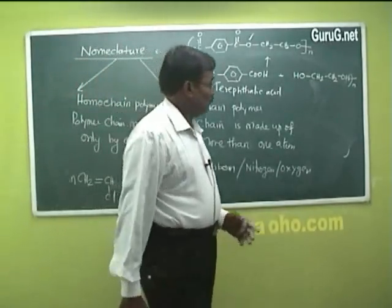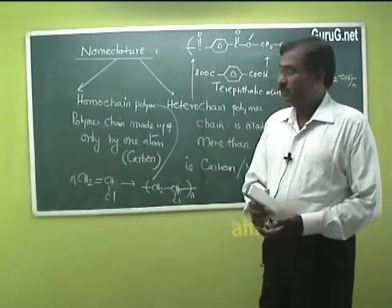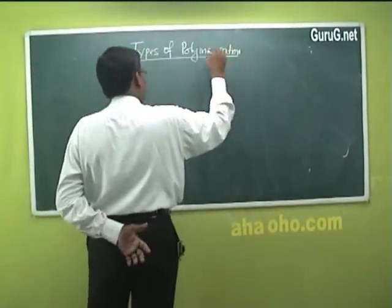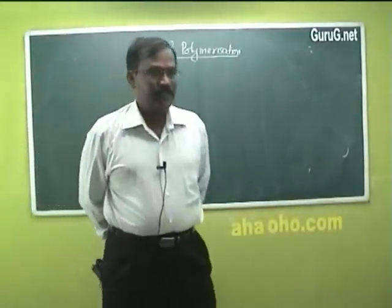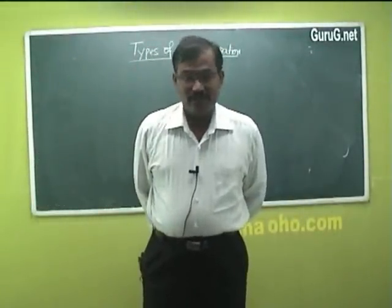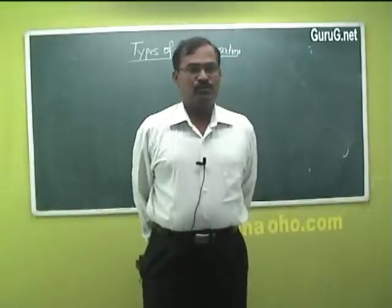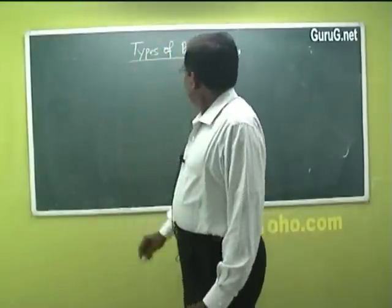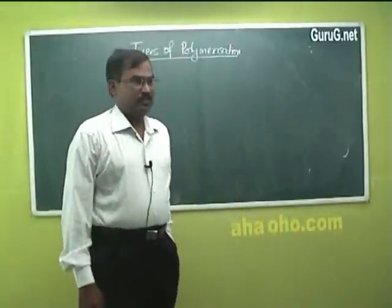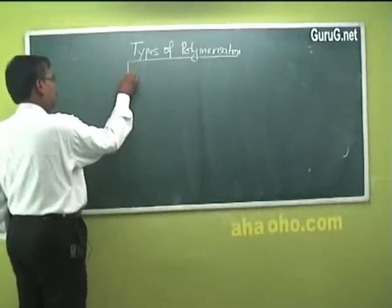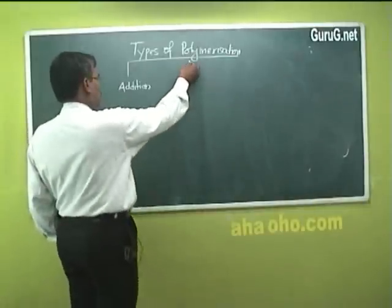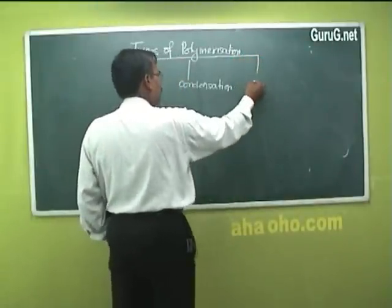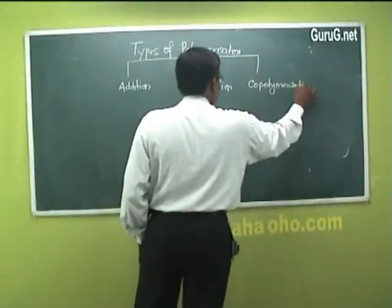Now let us move on to the types of polymerization. As we said earlier, polymerization involves a large number of small molecules combining to form a single bigger polymer. There are three types of polymerization: the first is addition polymerization, the second is condensation polymerization, and the third is copolymerization. Let us see each one.